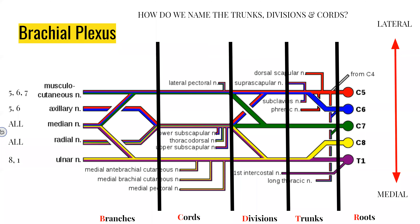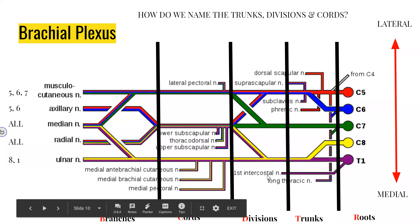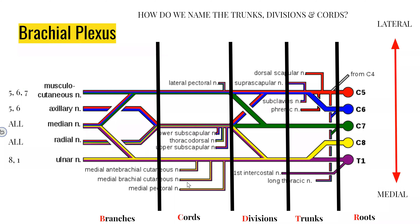Now we'll talk about nerves — specifically the brachial plexus. You guys are expected to know how to draw the brachial plexus. Faculty will tell you that the little branches that come off you don't need to know, and they're right that you don't need to draw them — but they're wrong in that you definitely need to know some of them. You'll figure out which ones based on your anatomy active learning sessions, the lab manual, and the clinical cases, because those things come up in tutorials, specimens and imaging questions.